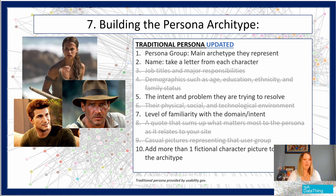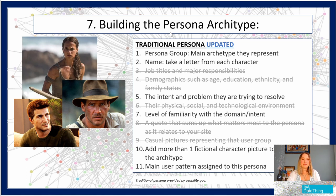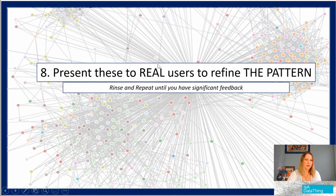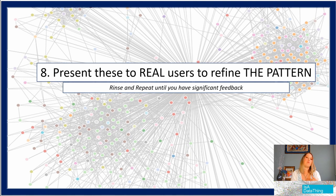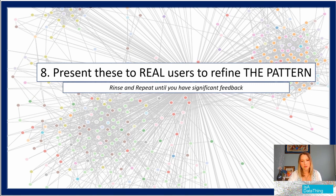Now we have a working persona — but we're not done. You need to present this to real people, real users, to refine those patterns. Because you used archetypes, they will be able to resonate with that user and put themselves in that user persona's shoes to really help you understand if that pattern is accurate or not. We're doing this to significance — do you have significant feedback to move forward with the persona and the pattern? You should have one persona per pattern that you've identified.